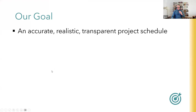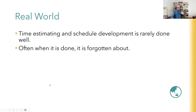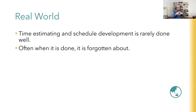My goal with this module is that by the end you have the tools, techniques, and confidence to put together an accurate, realistic, transparent project schedule. Unfortunately in the real world we see a lot of work done at the beginning of a project to convince people you know what you're doing, and then the schedule is completely forgotten about or not updated - and then everybody gets surprised about finishing behind schedule. You could have known this if you put together a project schedule and kept it updated, comparing what you originally planned versus what was actually happening.